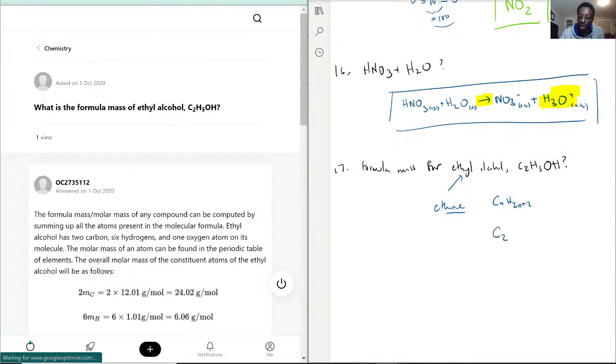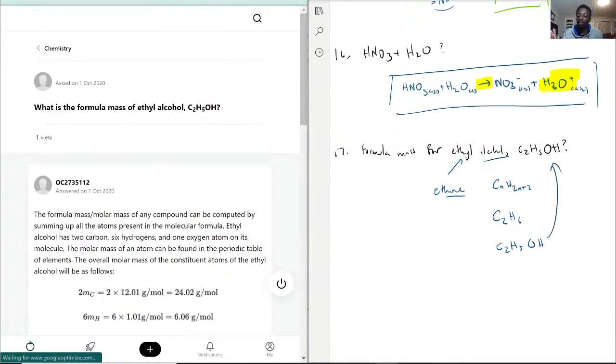So we have C2H and 2N plus 2, that would be 2 times 2, which would be 4 plus 2, H6. But now for alcohol, one of the hydrogens is dropped and replaced with a hydroxide group. So we have C2H5, because that's one of them dropped, and the hydroxide group is OH, and that's how we get that for ethyl alcohol.